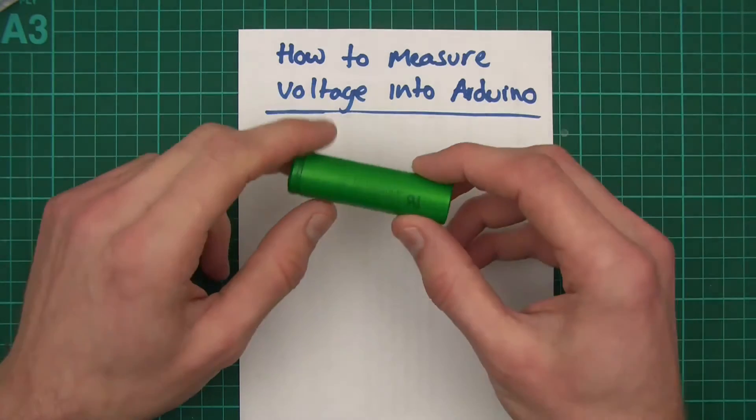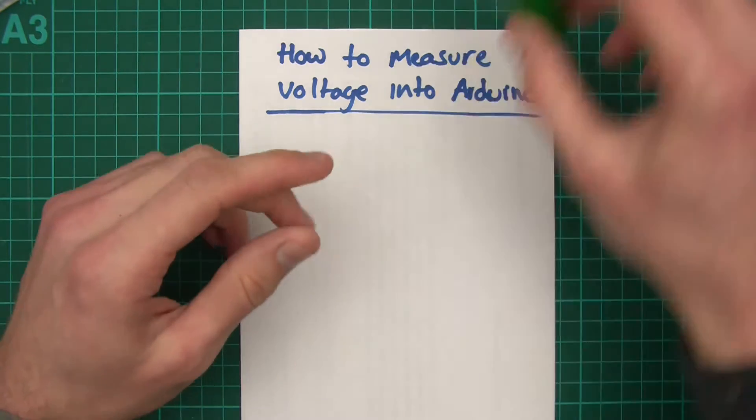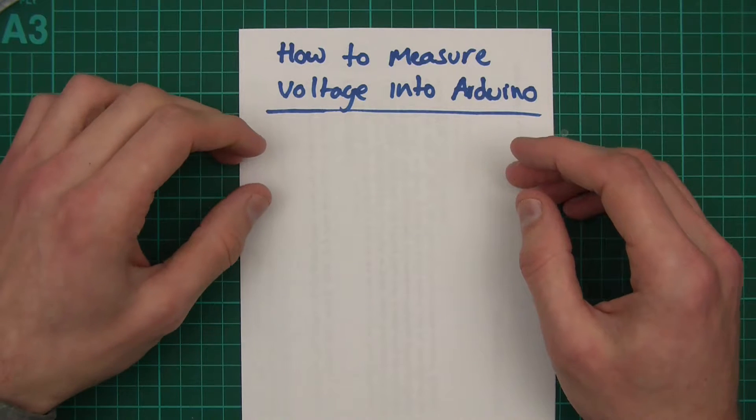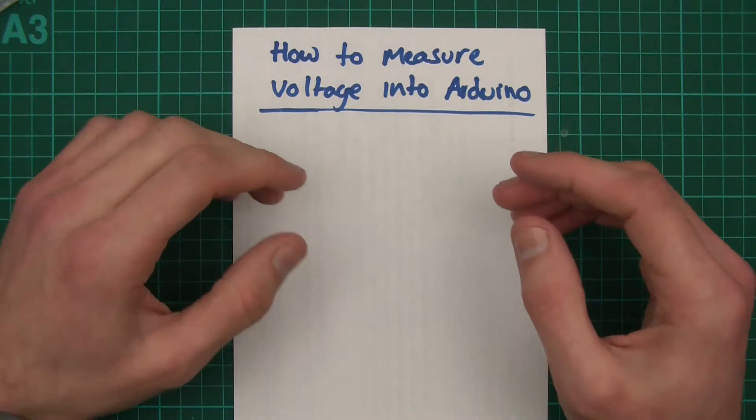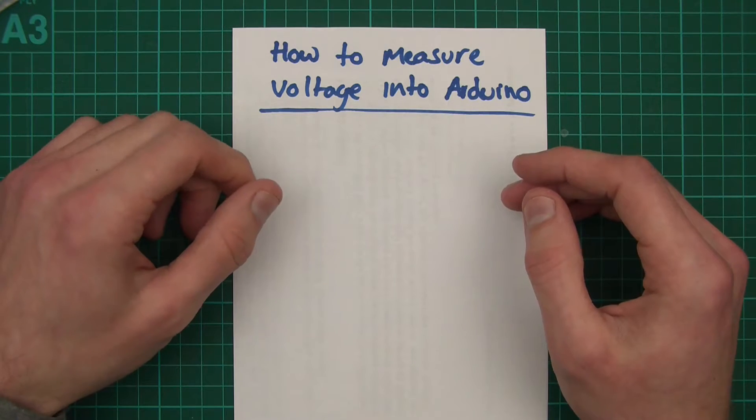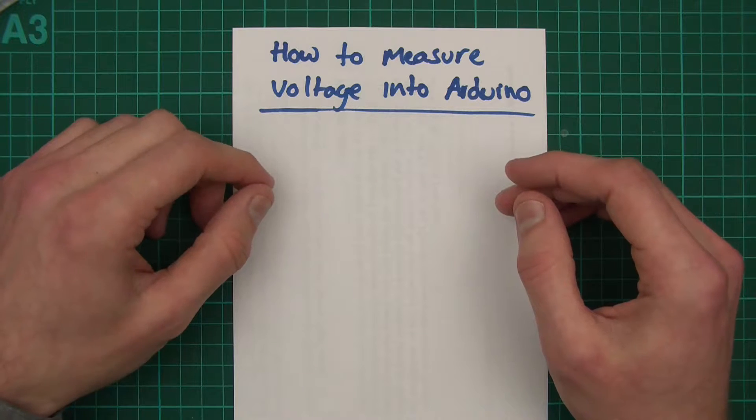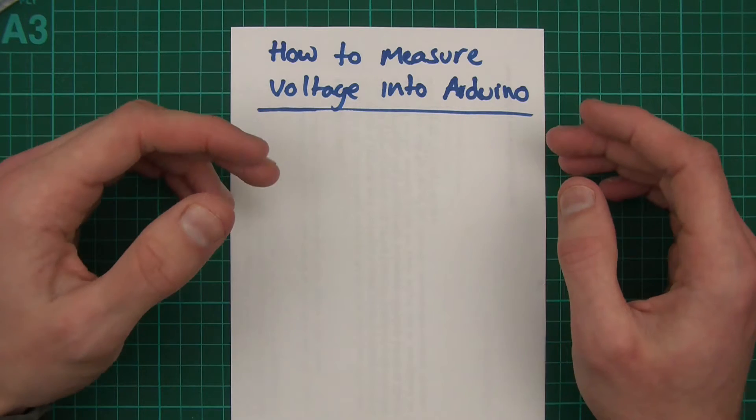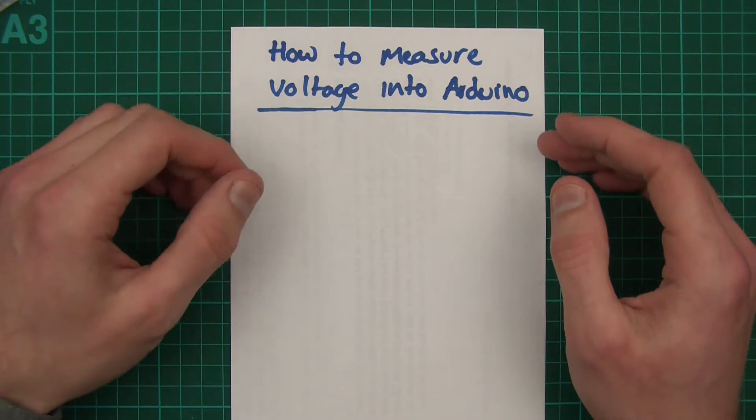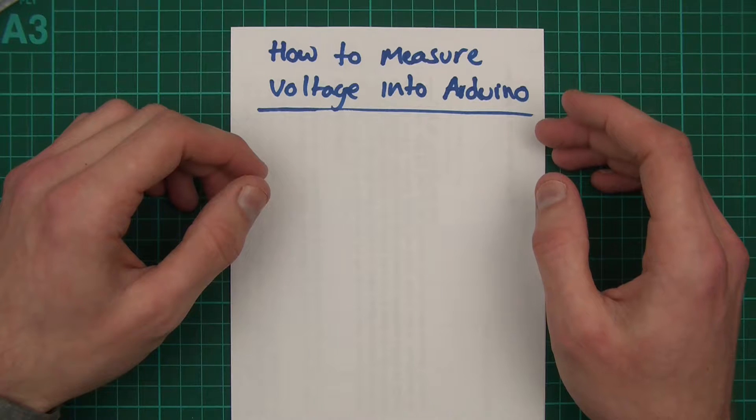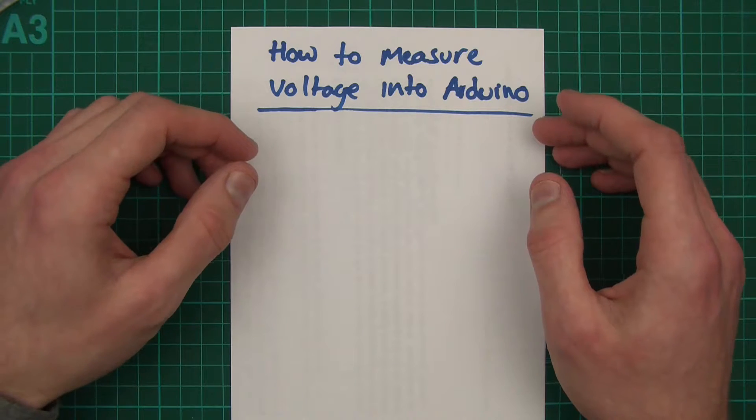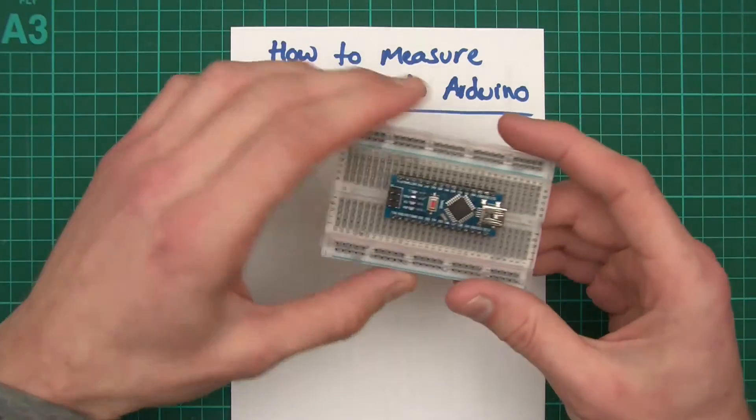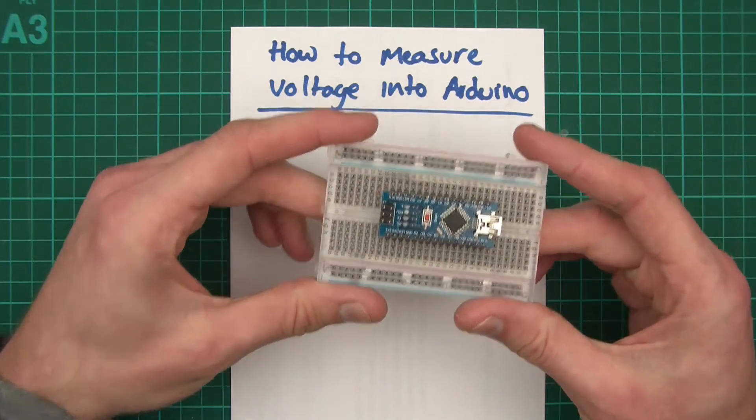There's lots of different reasons for why you'd want to read a voltage into Arduino. Maybe you want to read a voltage of a cell or something into Arduino, or maybe you want to do it for some diagnostics or safety checking or whatever. Maybe you want to read a voltage from somewhere in a circuit to be sure that it's working or to be able to use the voltage to aid in decision making.